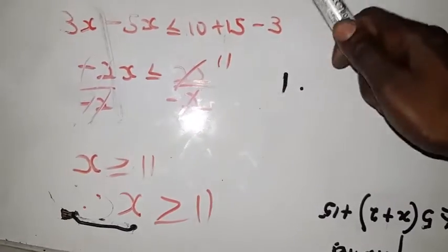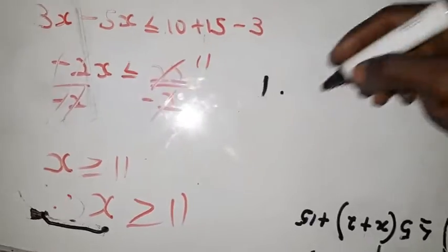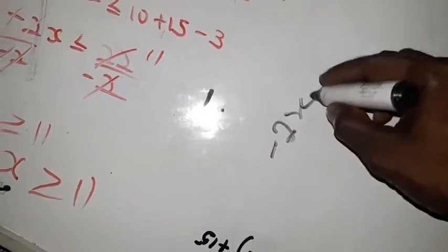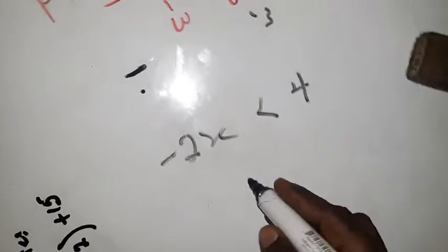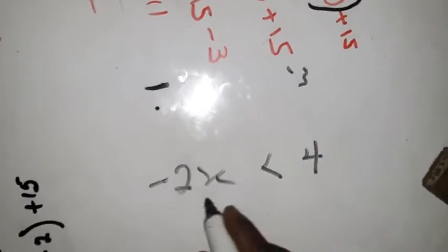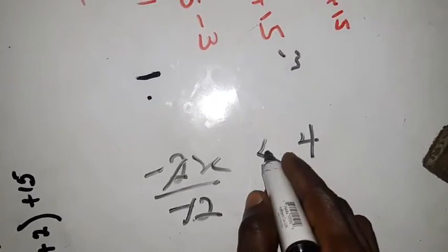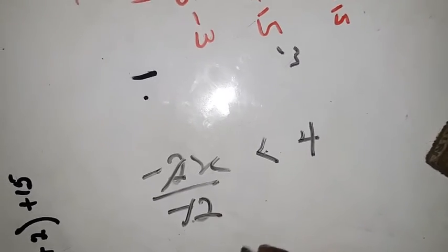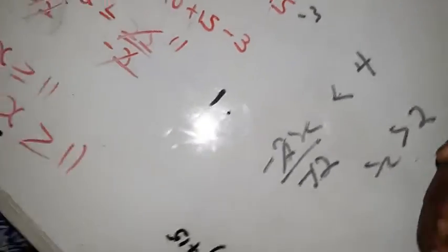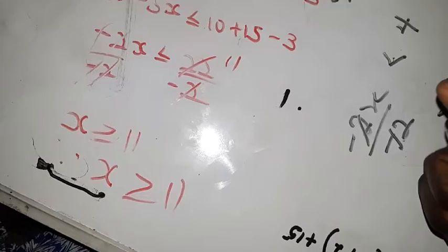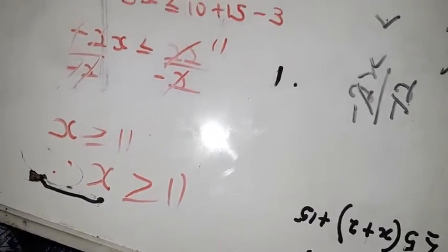What it means is that if you are dividing by negative, the sign has to change. This is very important. Once you are dividing by negative, the sign has to change. So -2s is less than or equal to 22 becomes s greater than or equal to -11. Your final answer is s is greater than or equal to -11.